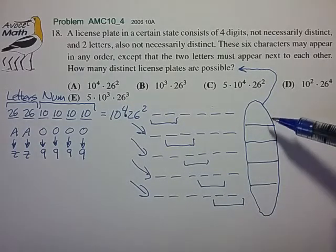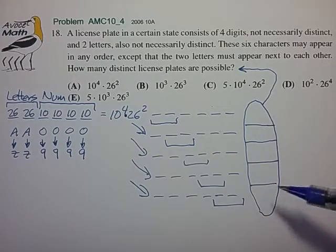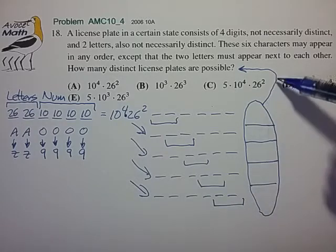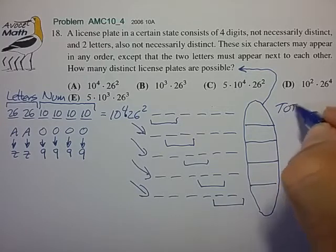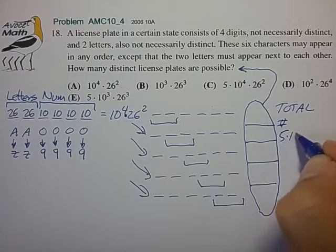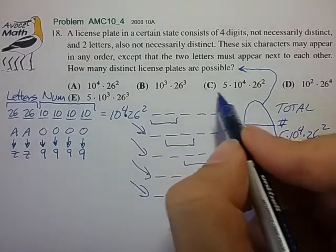This forms a situation where we can use the addition principle for counting sets. We have five subsets that are non-overlapping and taken together form the total set that we're interested in, and that gives us a total number of license plates of 5 times 10 to the fourth times 26 squared for choice C.